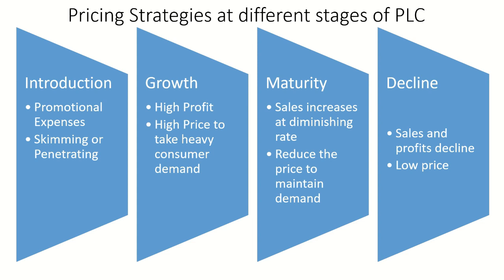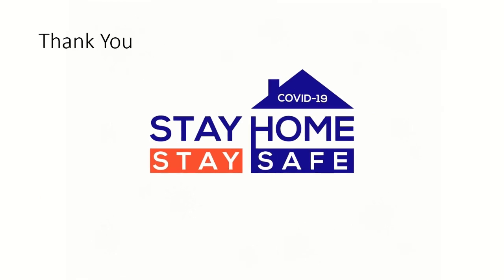In the maturity stage, sales increase at a diminishing rate, so it is better to reduce the price to maintain demand. There is acute competition from rival firms, so policies must be adopted to maintain demand and attract new customers. In the decline stage, profit and sales are very low, competition becomes more acute, and customers start shifting to substitute products, so only a low price can be charged. In conclusion, a firm can charge a heavy price only during the growth stage. That concludes today's class.